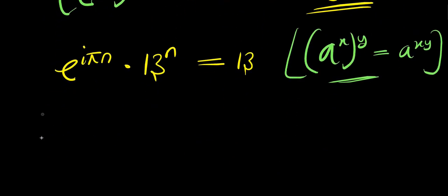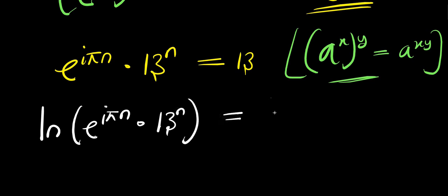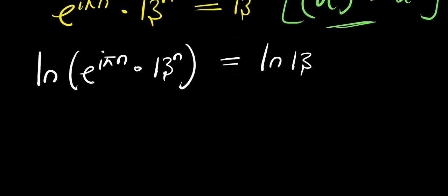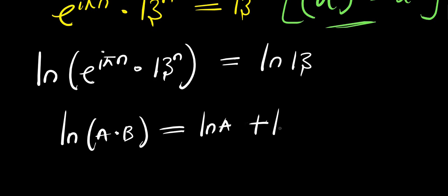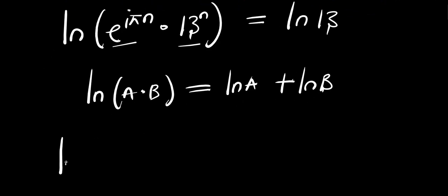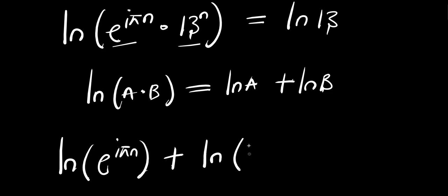Right now we can apply the natural log. We apply the logarithmic product identity: natural log of a times b equals natural log a plus natural log b. So applying that here, we have natural log of e to the power i times pi times n, plus natural log of 13 to the power n, and this equals natural log of 13.